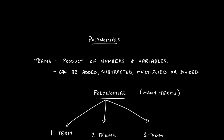A term is simply a product of numbers and variables. That means 3 is a term, 3x is a term, 3x squared is a term. 3x plus 4y is not a single term because it's not a product — 3x plus 4y would be two terms. 3x is one term because those two are being multiplied, and 4y is another term because those two are being multiplied as well.